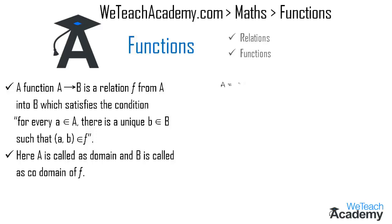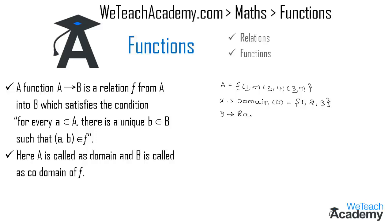Let us consider the ordered pairs of set A as (1,5), (2,4) and (3,9). All the x-coordinates of the ordered pairs are called the domain, so x-coordinates 1, 2, and 3 are elements of the domain. Similarly, all the y-coordinates are called the co-domain or range, so y-coordinates 5, 4, and 9 are elements of the range.